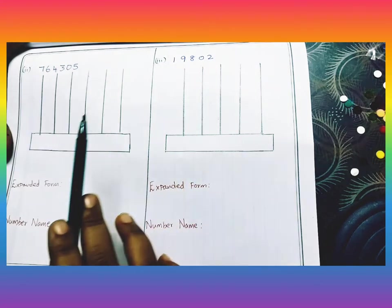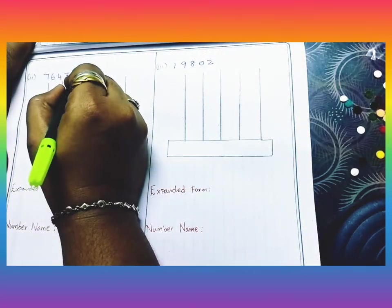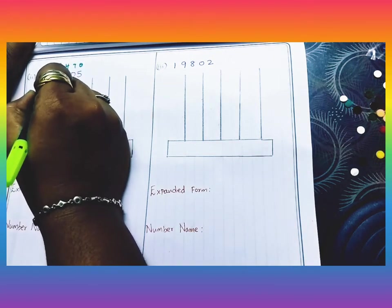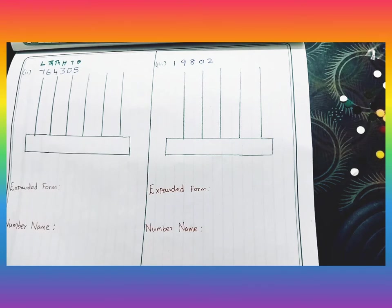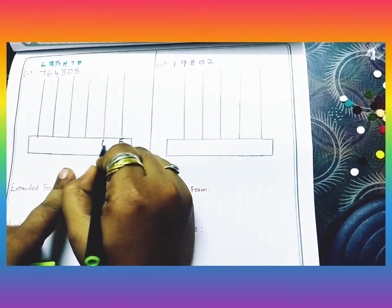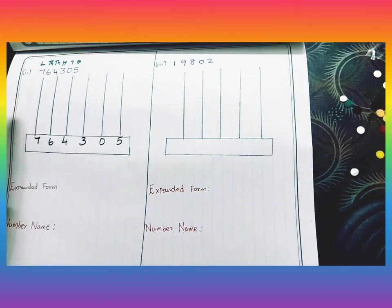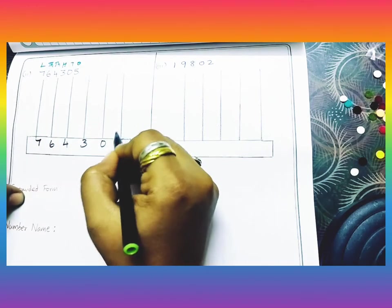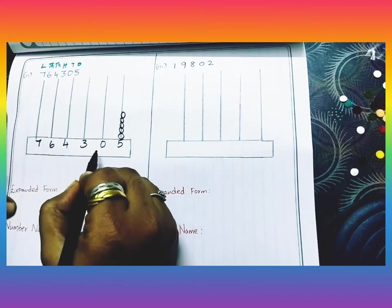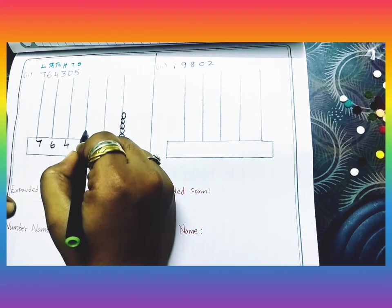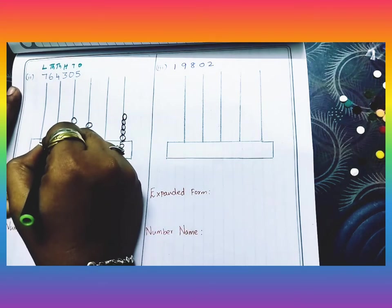Example two is a five-digit number and example three is a six-digit number. For the six-digit number, write the place values on top: ones, tens, hundreds, thousands, ten thousands — and the next family is the lakh family. Stick the bindis: five in ones, zero in tens (no bindis), three in hundreds, four in thousands, six in ten thousands.